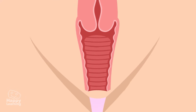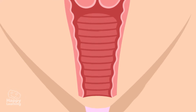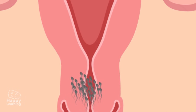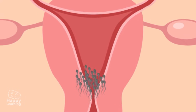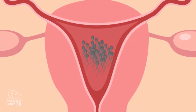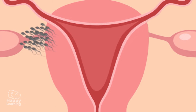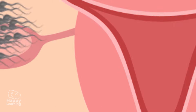In order for that to occur, semen — which carries hundreds of thousands of sperm cells — must first pass through the vagina into the uterus to finally reach the fallopian tubes.